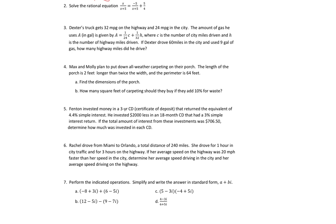Going on to the next one, we need to solve the rational equation: x over x plus 5 equals negative 5 over x plus 5 plus 5 over 4. The first thing we're going to do before solving is look at the bottoms of my fractions and figure out for which x do those equal zero. In this case x plus 5 equals zero, so x equals negative 5. That is my restriction. If I get an answer of x equals negative 5, it won't work because negative 5 plus 5 is 0, and you can't divide by zero.